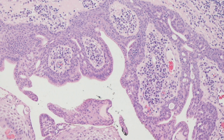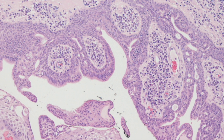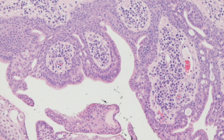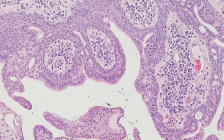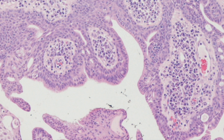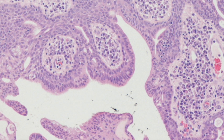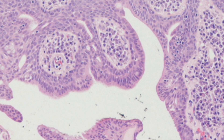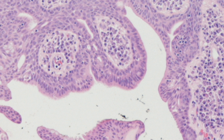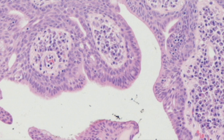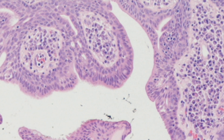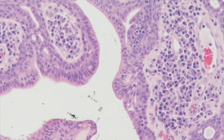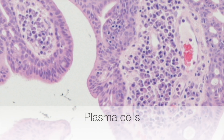Here you can see the double cell layer with an outer layer of columnar epithelial cells and an inner layer of basal cells. In the stroma there is a dense infiltrate of plasma cells.